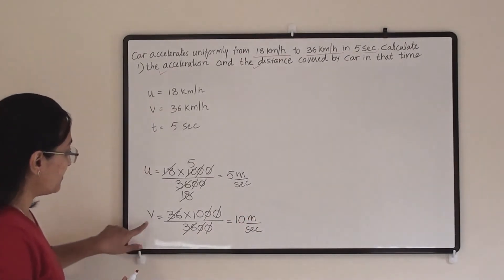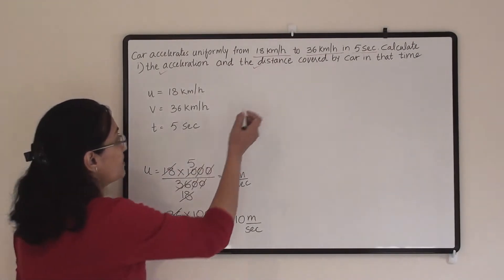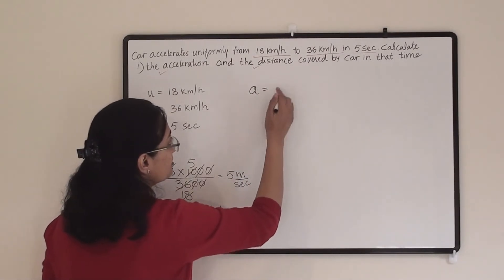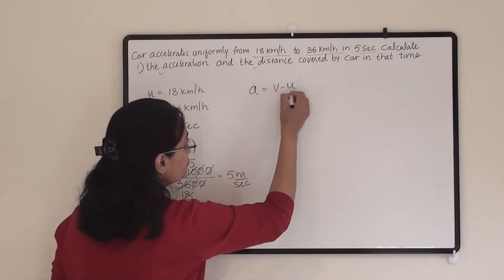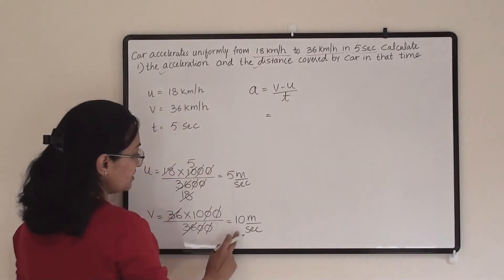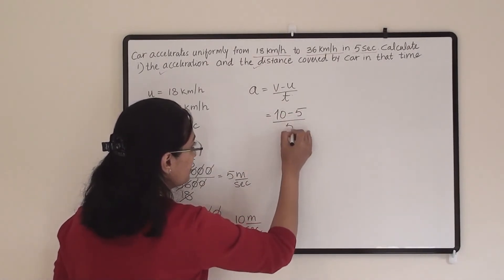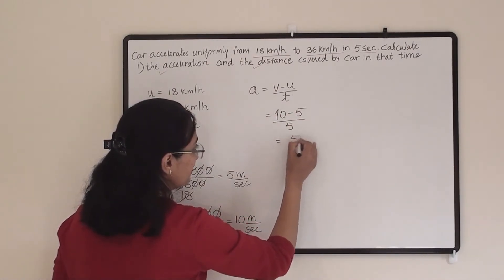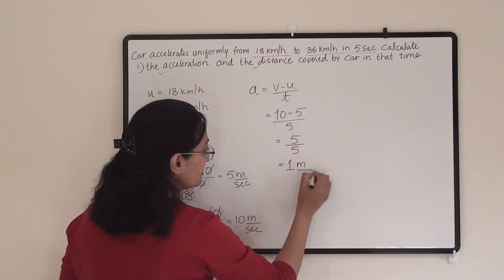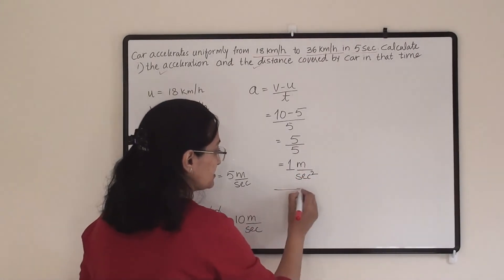Now what is our formula to find acceleration? Acceleration a = (v − u) / t = (10 − 5) / 5 = 5 / 5 = 1 meter per second square. So 1 m/s² is our first answer.